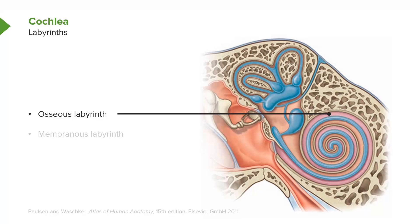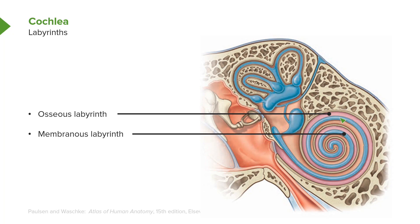Running within this osseous labyrinth is a membranous component — the membranous labyrinth, shown here in blue. It too follows the coiled nature of the bony labyrinth, ending finally at the apex of that coiled cochlea.